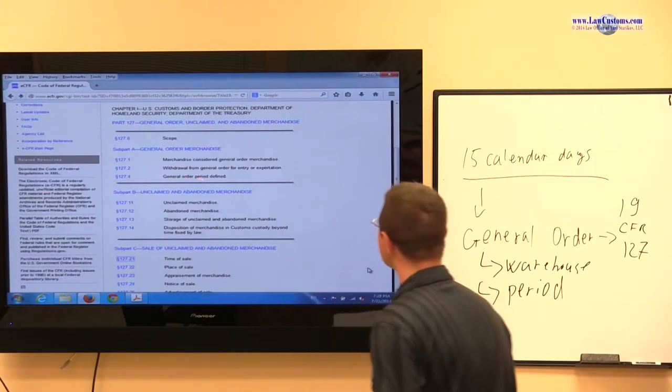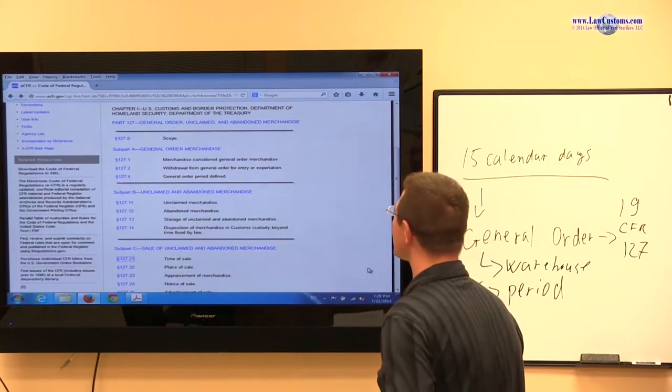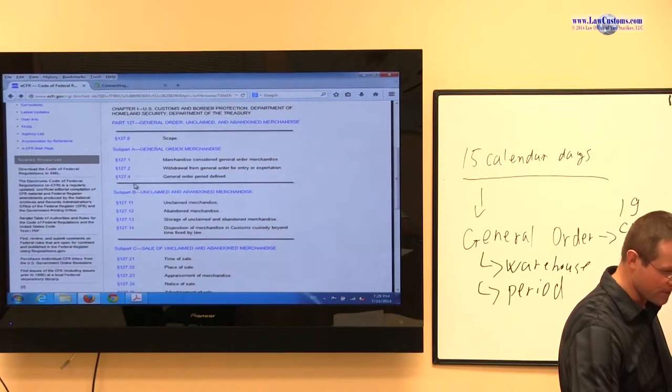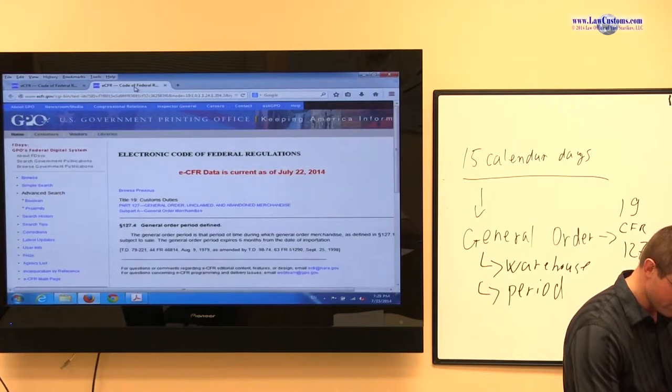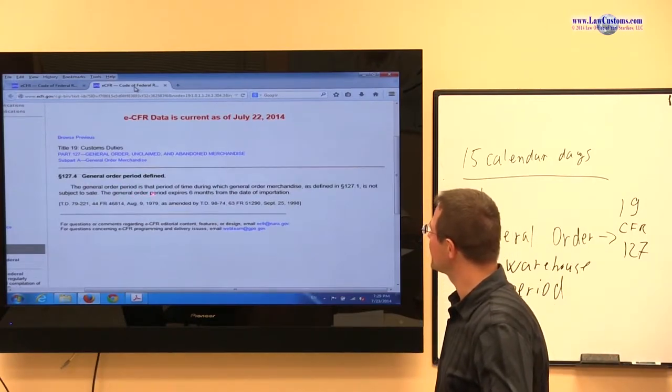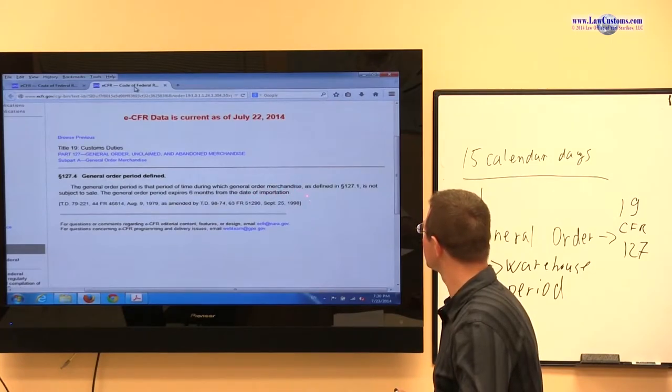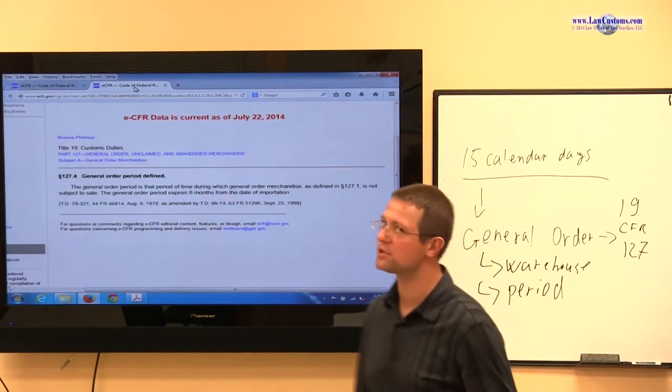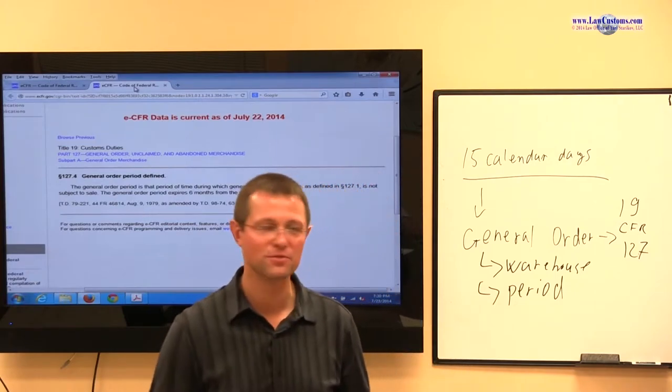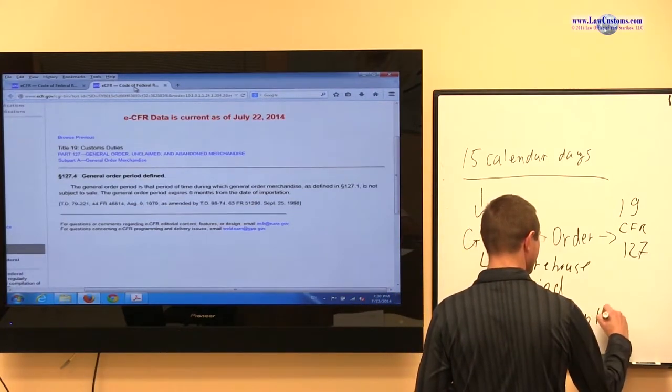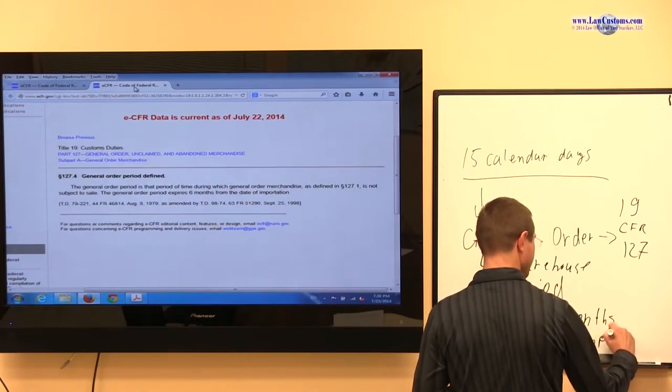It also refers to the broader type of inquiry. It also refers to, not only to warehouse, but a period within which it can stay in that warehouse. Sometimes called the general order period, right? And the general order regulations are prescribed where? Part 127, 19 CFR Part 127. So let's take a look at some of them. Let's see, let's take a look at 127.4 and see what it says. 127.4 is called general order period defined. So let's see what it says.